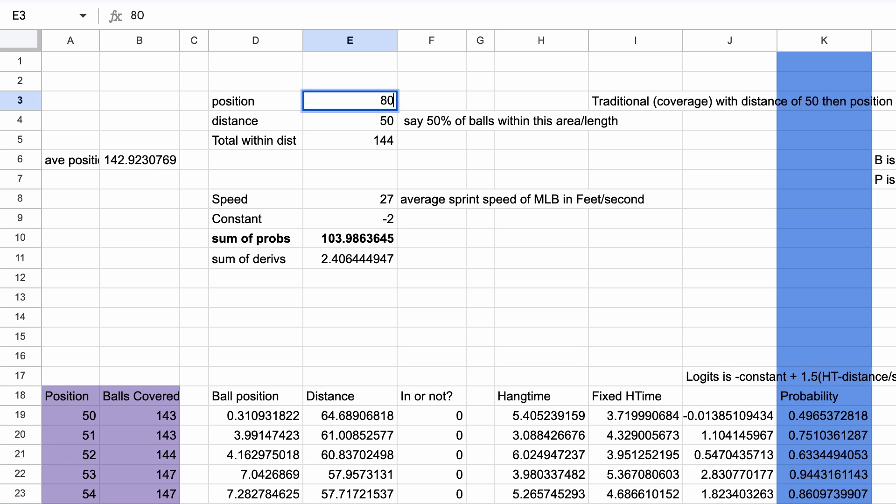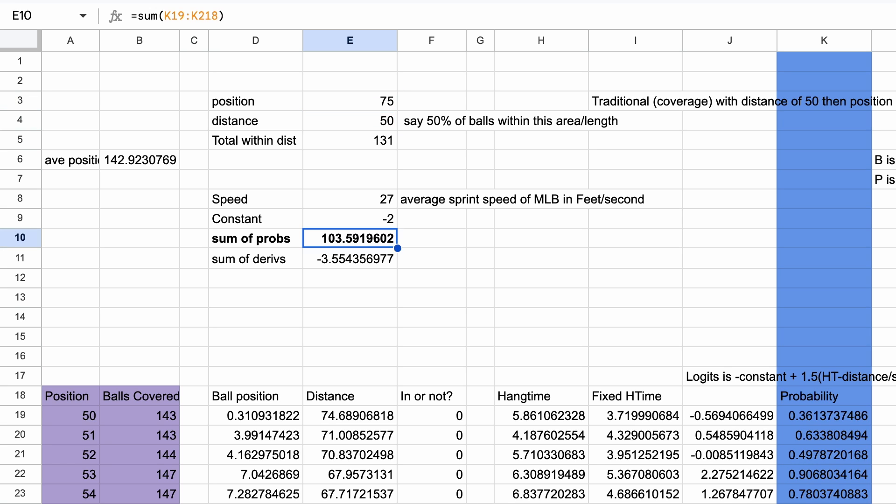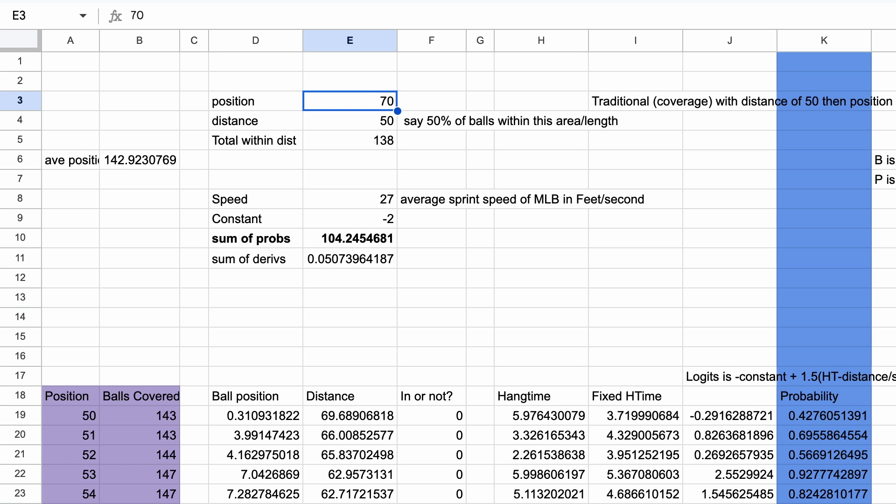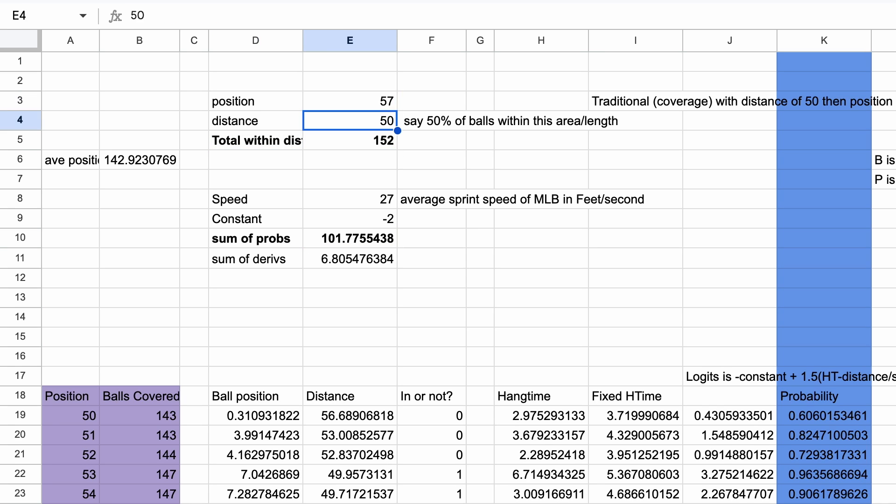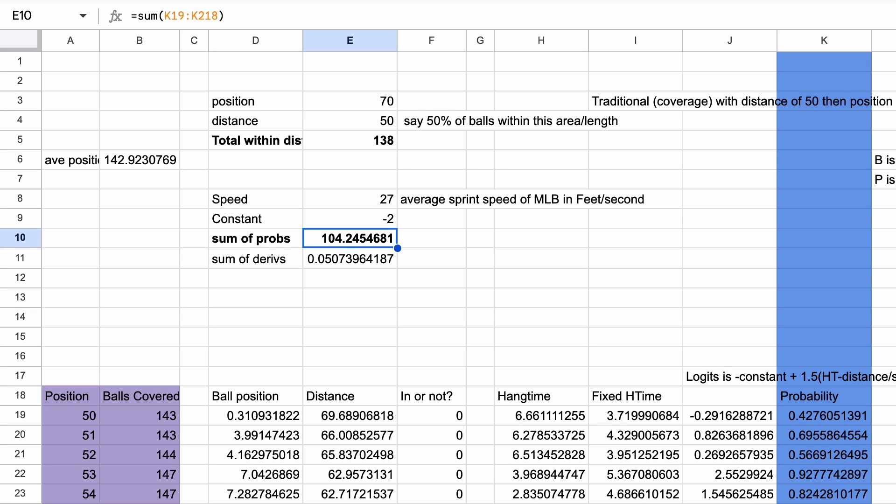Now in our simple setup, it's easy enough to change our position and just watch the value of the sum of the probabilities go up and down until we find the maximum. I get that the optimal position is 70. Notice that this is quite different from where we would have put the outfielder with the coverage approach. That's 13 feet different, or about 4 meters. That's a significant difference that could mean the difference between a catch or not for many balls.